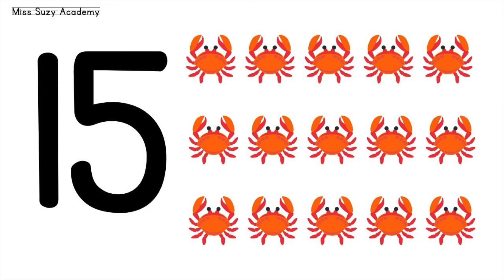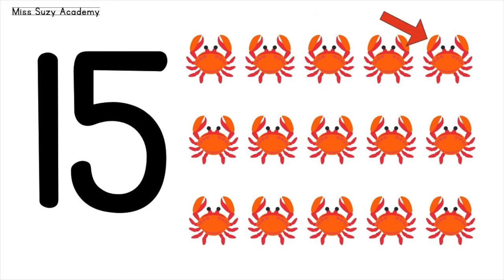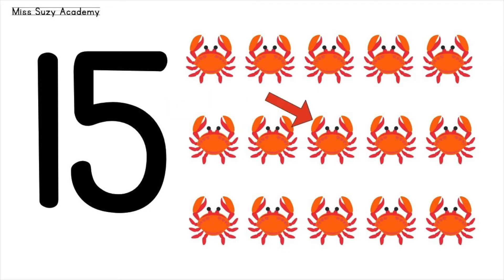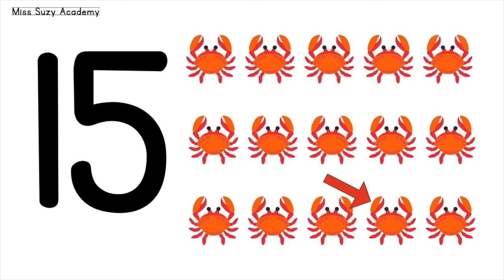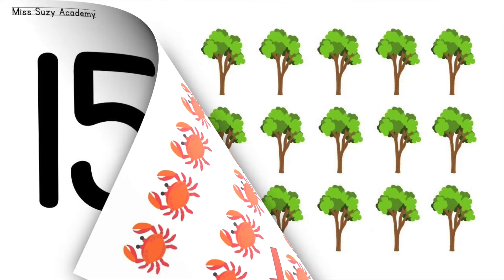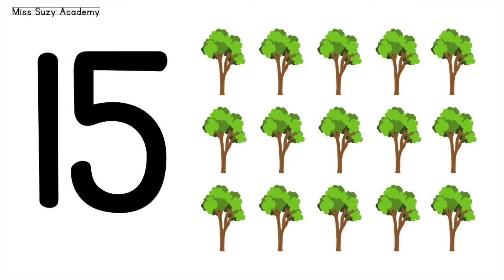15 crabs: 1, 2, 3, 4, 5, 6, 7, 8, 9, 10, 11, 12, 13, 14, 15. 15 crabs. 15 trees.